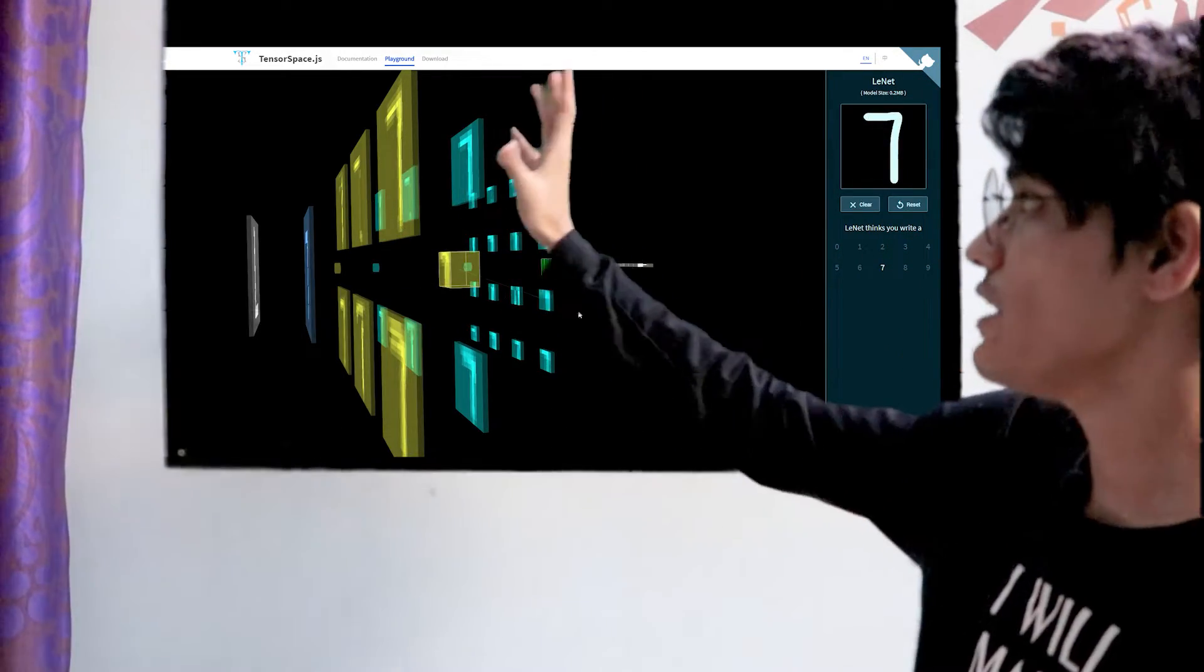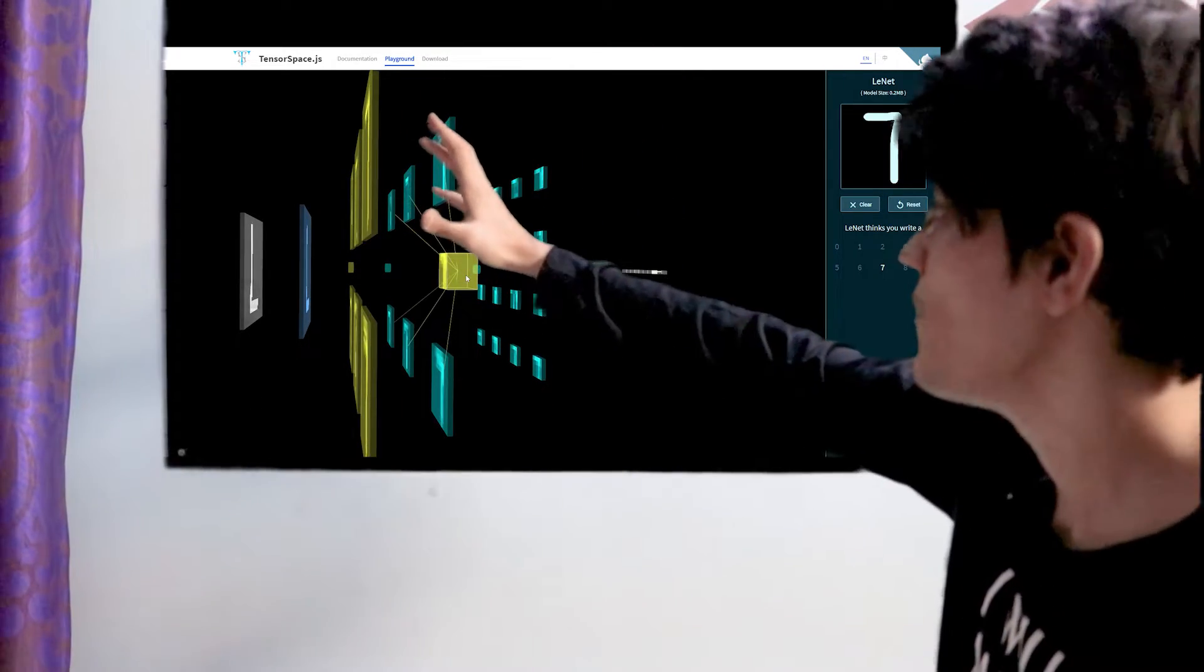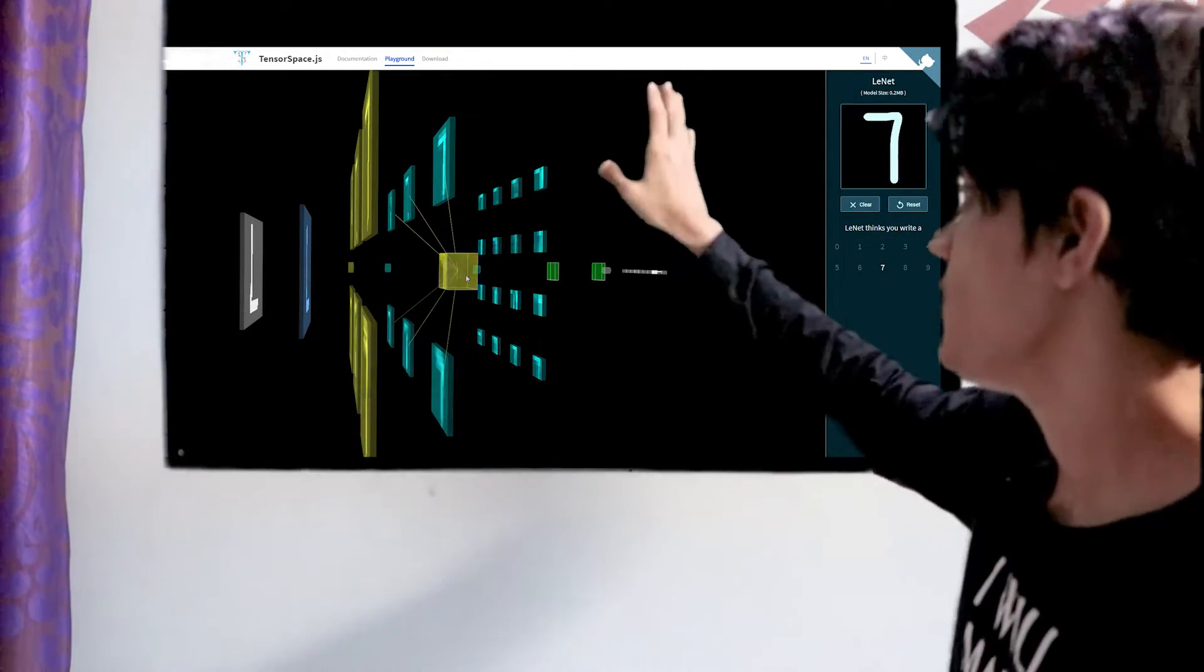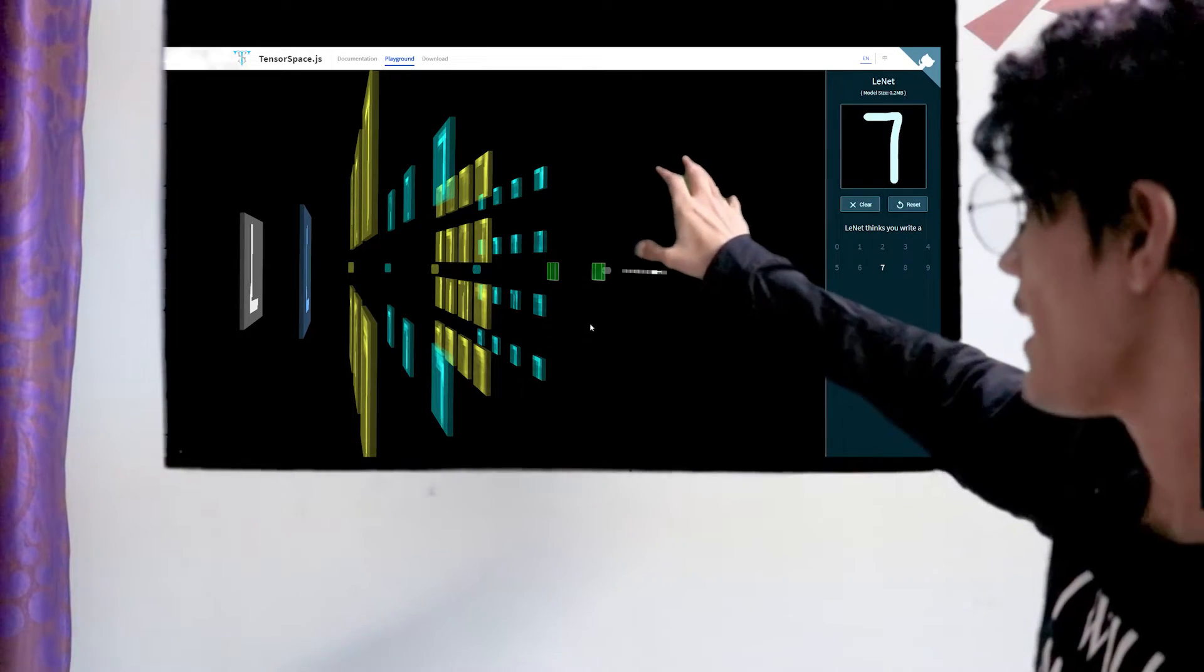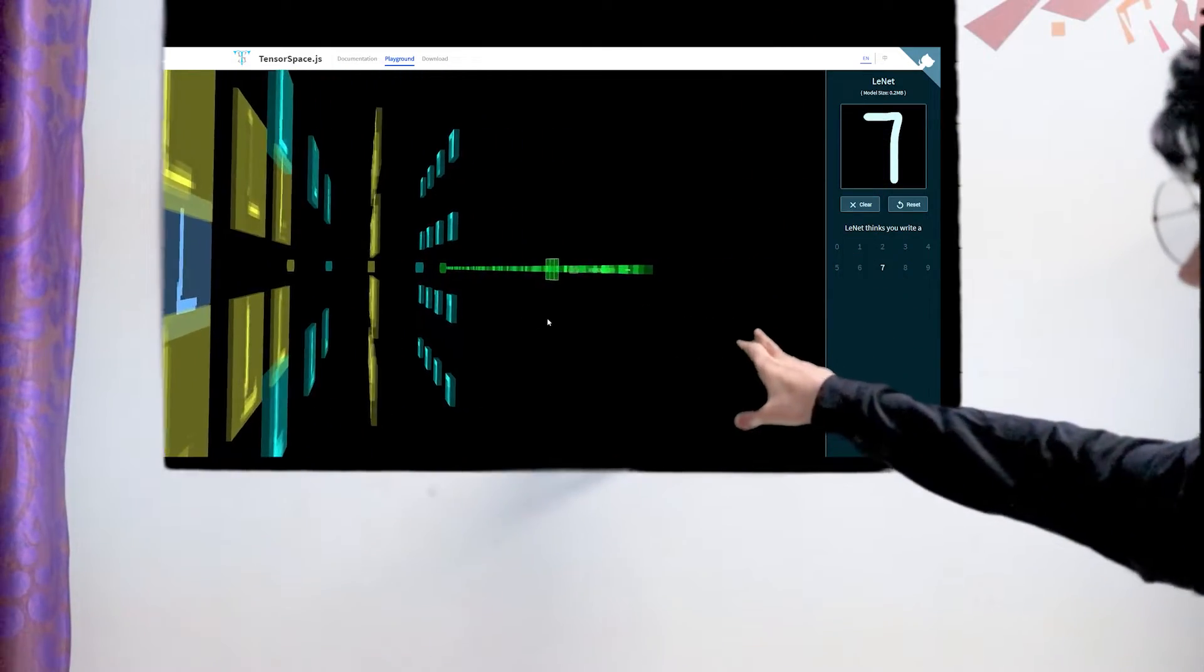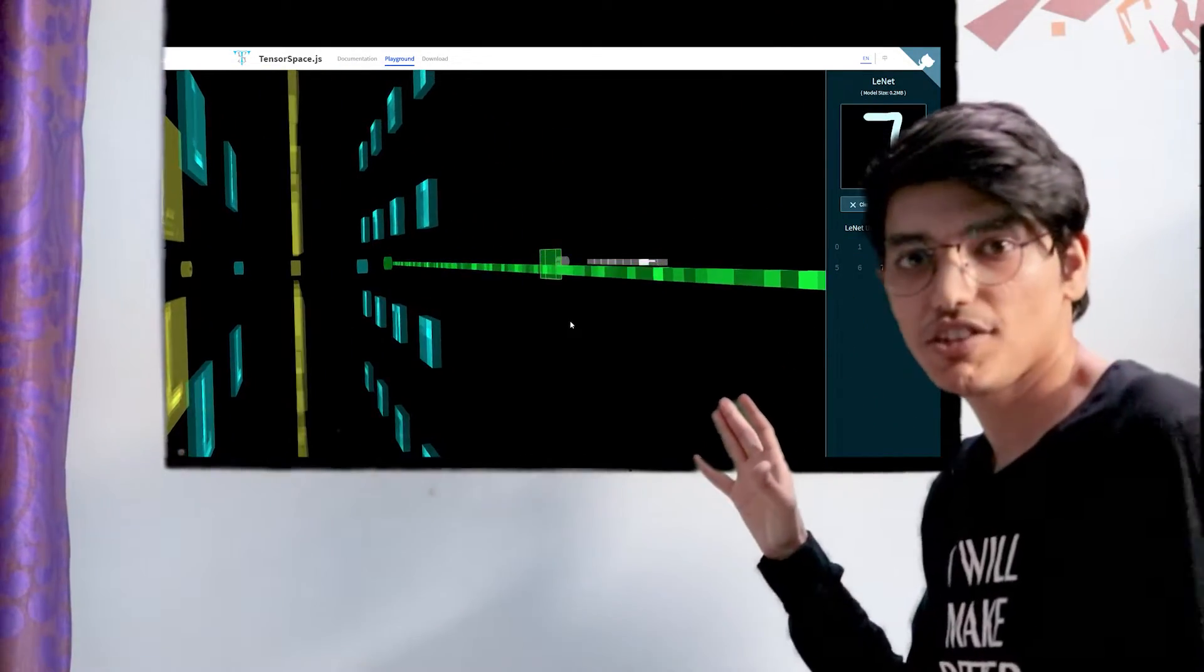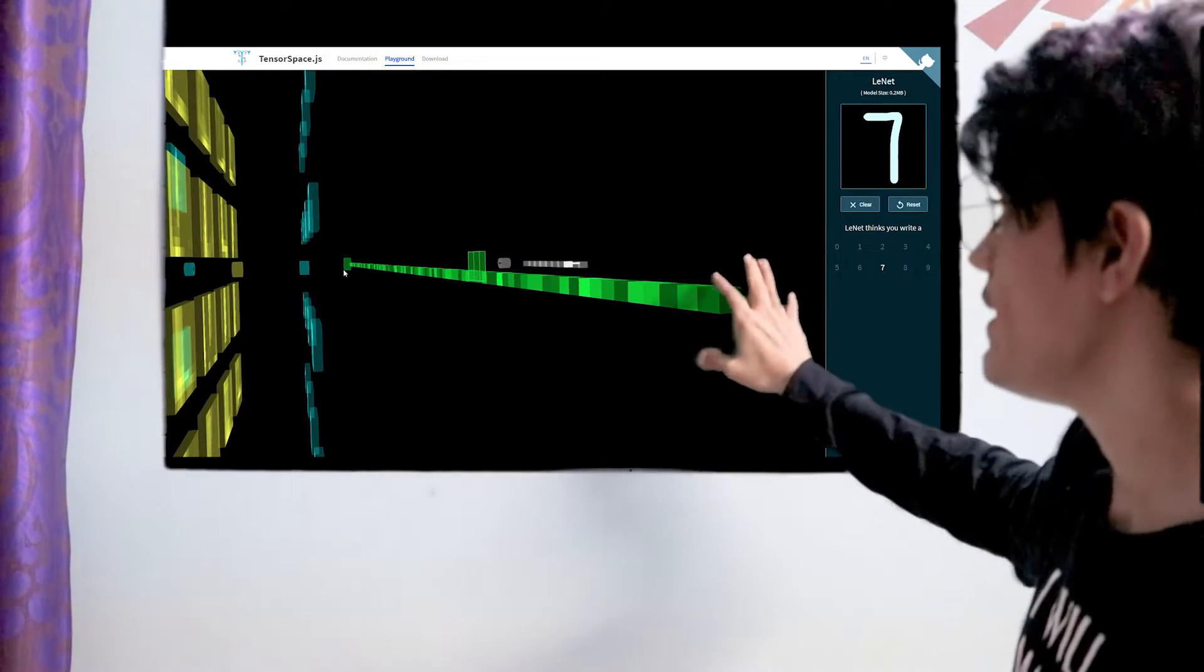Then we apply average pooling from the previous convolutions. We do convolution again, then apply average pooling again. Here you can see the flattening layer, which converts all two-dimensional matrices into a 1D array.